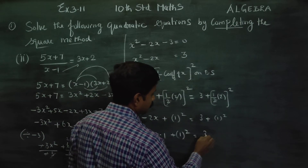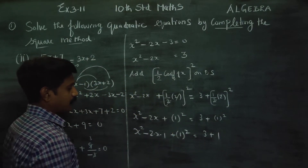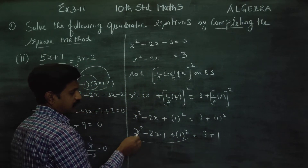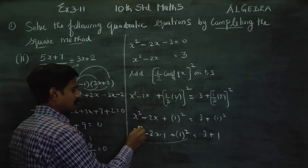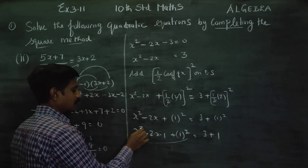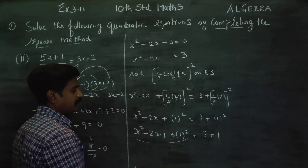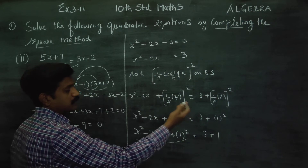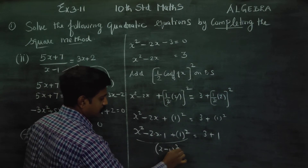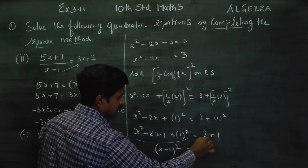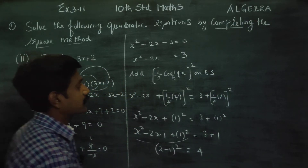Let's see the algebraic identity: a squared minus 2ab plus b squared. This formula gives us (a minus b) squared. Applying it here: (a minus b) whole square equals 3 plus 1, which is 4.